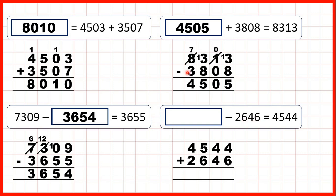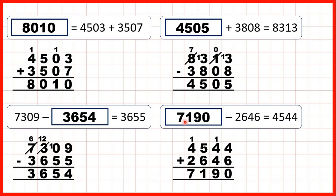It's important to recognise: if we have a missing number addition problem, we always use subtraction to find the missing number. But if we have a missing number in a subtraction calculation, it depends. If the second number or subtrahend is missing, we still use subtraction. But if it's the first number or minuend that's missing, we use addition, because subtraction problems can be read backwards as addition problems. So 4 plus 6 is 10 — that's 1, 0. 1 plus 4 plus 4 is 9. 5 plus 6 is 11 — so 1, 1. And 1 plus 4 plus 2 is 7. So our missing number is 7,190.